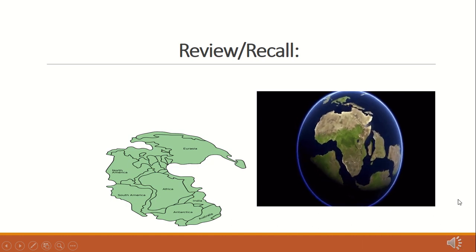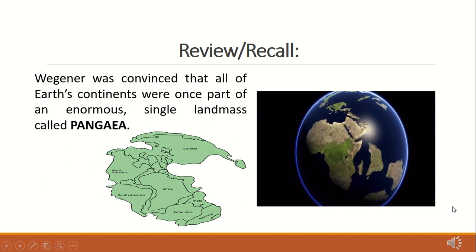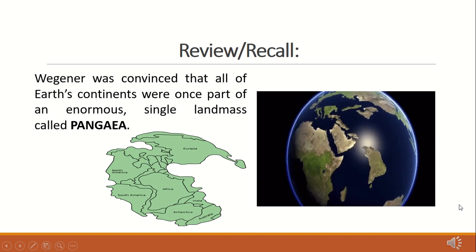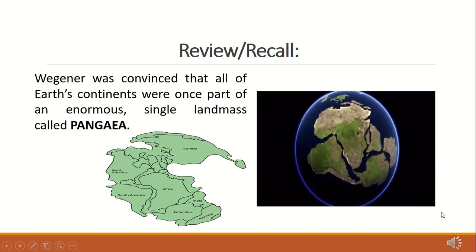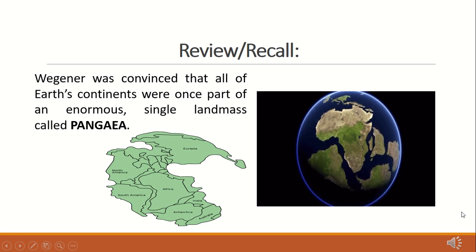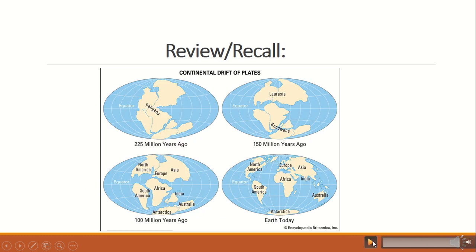Wegener was convinced that all of the earth's continents were once part of an enormous single land mass called Pangea. When Pangea broke up, the northern continents of North America and Eurasia became separated from the southern continents of Antarctica, India, South America, Australia, and Africa. The large northern continent is called Laurasia and the southern continent is called Gondwana Land.